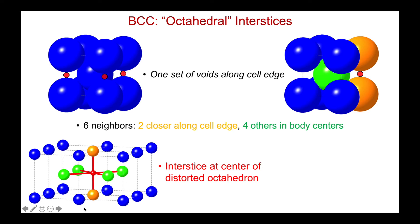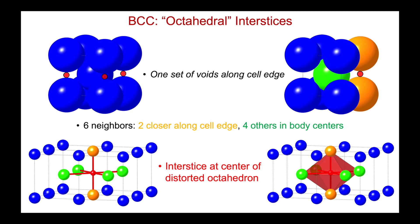So it's in the center of an octahedron, but this octahedron is distorted. The bond length from the interstice to the orange atom is actually significantly shorter than the bond length from the interstice to the green atoms at the body centers. Here's a polyhedral view just showing that my octahedron around the interstice is compressed along this axis. It's far from ideal.